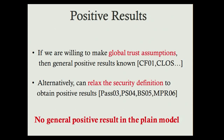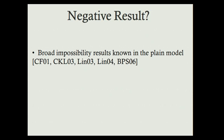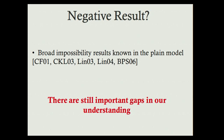In the very simple plain model, we do not know a generic positive result — which is quite intriguing, because for standalone computation we do know positive results in the plain model. Broad impossibility results are known in the plain model, but only for very strong notions of concurrency like UC. This still leaves important gaps: do we really need only two levels — standalone or UC — or is there something in between?